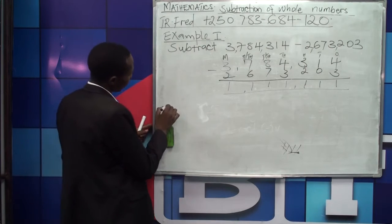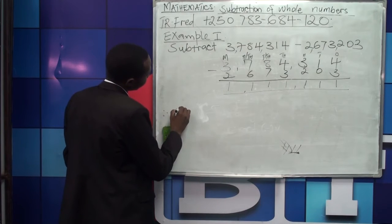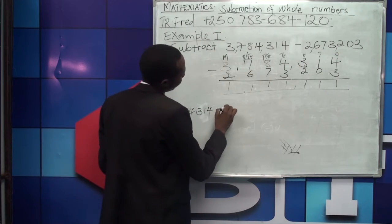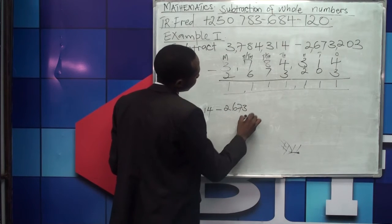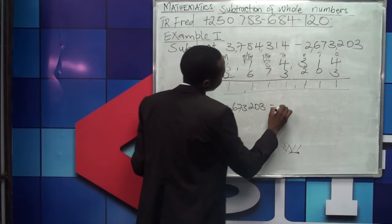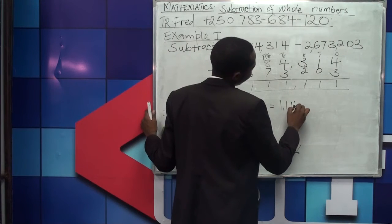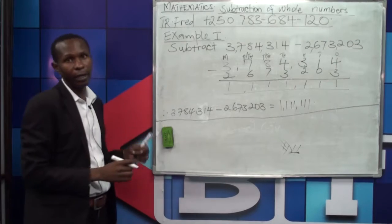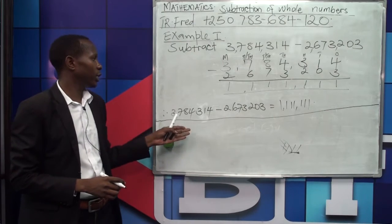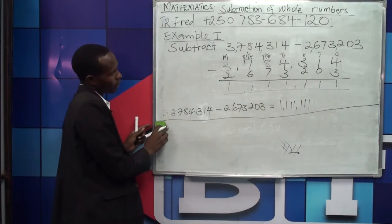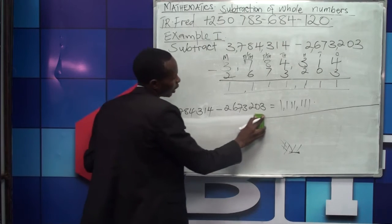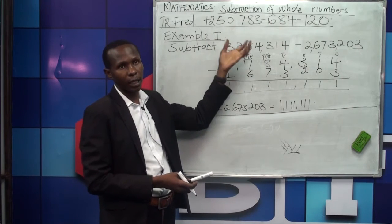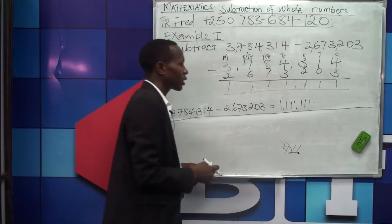Therefore, three million seven hundred eighty-four thousand three hundred fourteen, take away two million six hundred seventy-three thousand two hundred three, gives us one million one hundred eleven thousand one hundred eleven. That is my answer. From there I use my ruler to underline — make sure you use a ruler, because a freehand line is not straight.